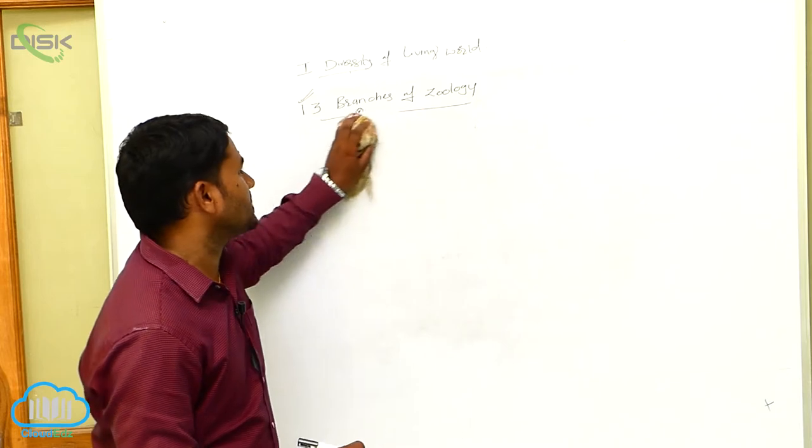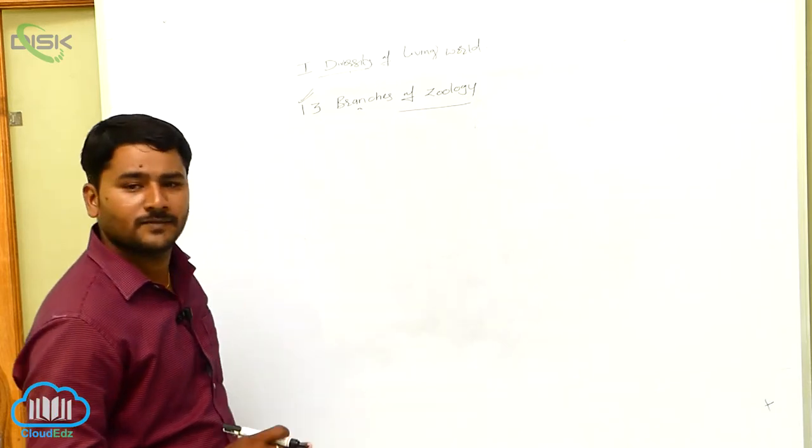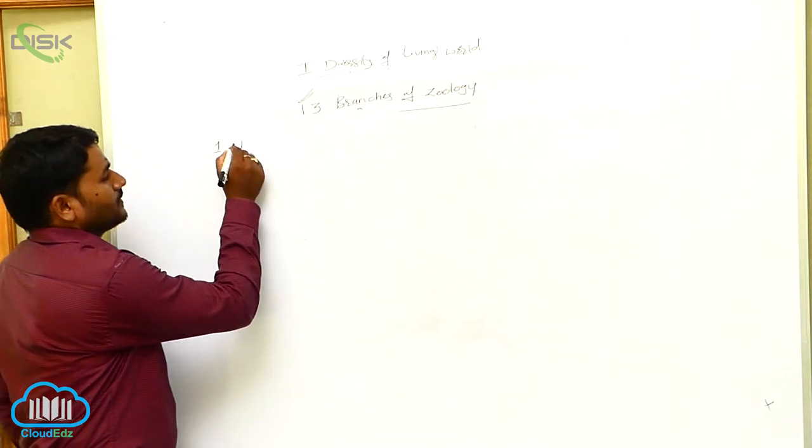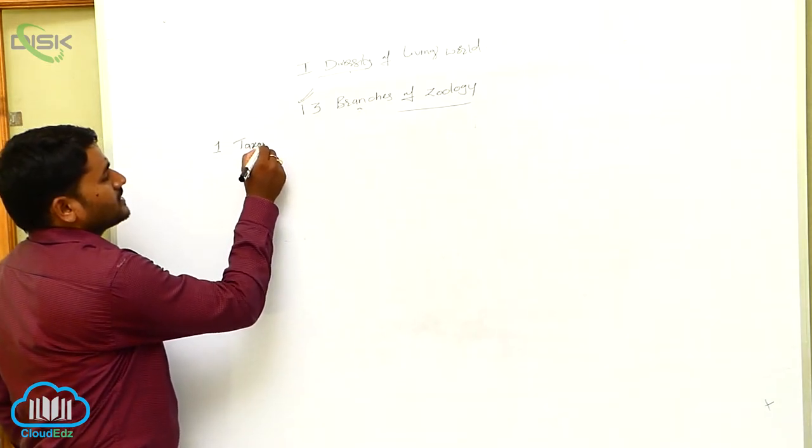Let's see different branches of zoology. Let's see the first branch. The first branch is taxonomy.